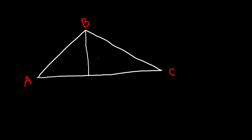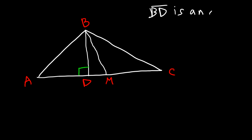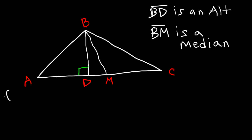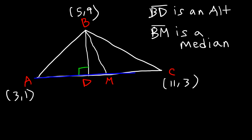Let's say this is point A, B, and C, with point D and M also shown. In this picture, BD is an altitude and BM is a median. Point A is at (3, 1), point B is at (5, 9), and C is at (11, 3). Find the slope of the altitude and the median. To find the slope of the altitude, we need to find the slope of AC, because BD is perpendicular to it. To find the slope of a perpendicular line, we simply find the negative reciprocal.